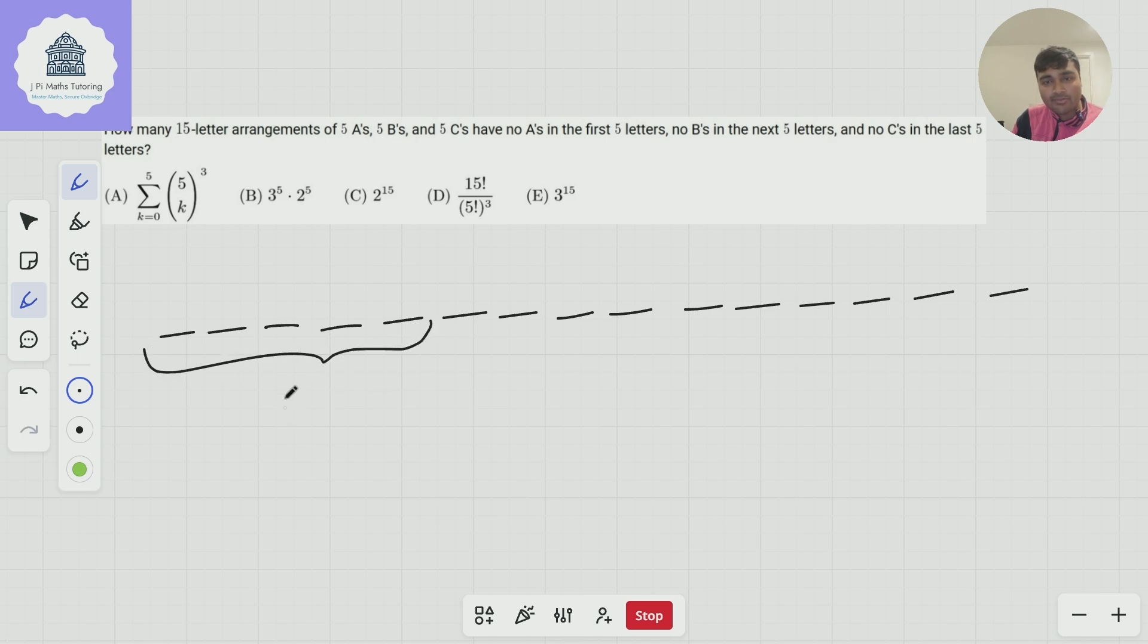Our second group of 5 and then our last group of 5. Now in the first group we can only have Bs and Cs. In the second group we can only have As and Cs, and in the final group we can only have As and Bs.